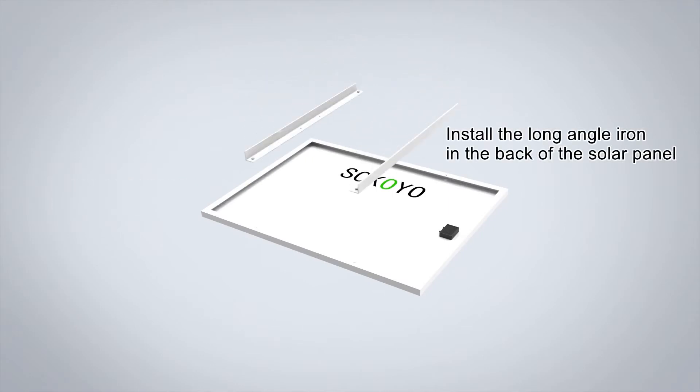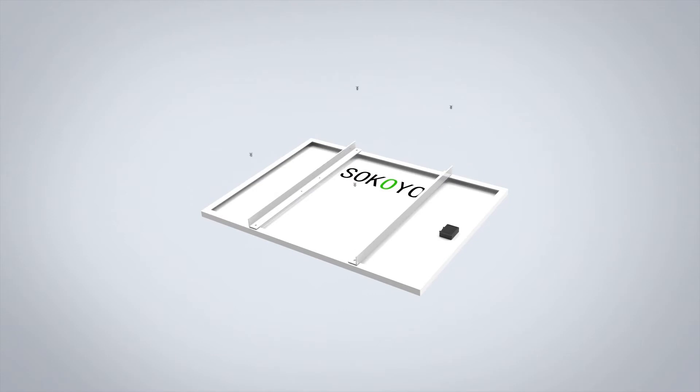Install the long angle iron in the back of the solar panel. Tighten the screws and nuts.